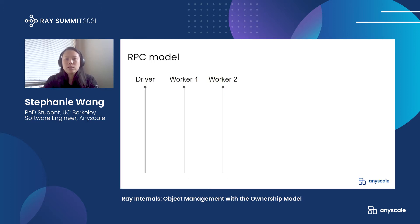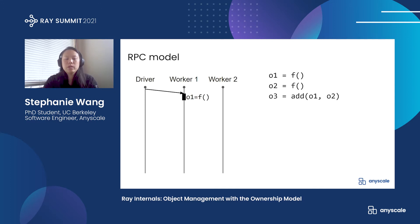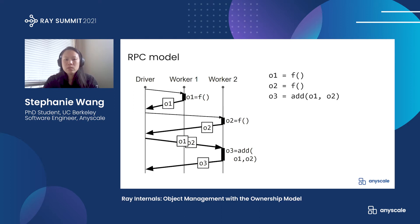As a point of contrast, let's look at the RPC model. I'll walk through a simple RPC program execution on three distributed processes. We have a driver that invokes the RPCs and two stateless workers that can execute the requests, which I'll call tasks. We'll begin by sending an F task to worker one. And once the worker finishes the task, it sends back the return value. We do the same to compute O2. And then finally, we can send the values back to worker two to compute their sum.